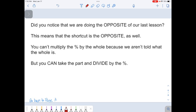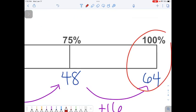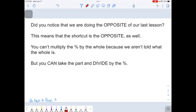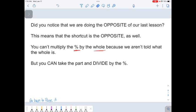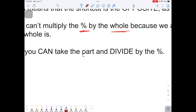So did you notice that we're actually doing the opposite of our last lesson? In the lessons before this, we knew the number that was underneath 100%. But this time, we're being asked to solve for it. So we're doing the opposite. So we can do the opposite of the shortcut. We cannot multiply the percent by the whole because we don't know what this number is underneath 100%. Remember, we had to figure out it was 64. If we knew that number, we could multiply the percent by that number. But we don't know it. So instead, we're going to take the part that we do know and divide it by the percent.